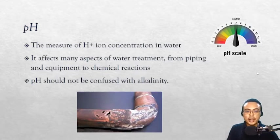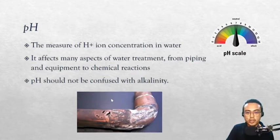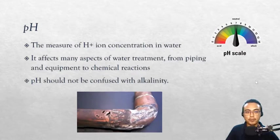The next chemical parameter is pH — the measure of proton ion concentration in water. The higher the proton concentration, the lower the pH. pH affects many aspects of water treatment: if water is acidic it can leach metal ions from piping and corrode equipment over time. If pH is too high it can also corrode process piping by inducing solubilization of piping materials. In water treatment, the ideal pH is neutral or very near neutral. pH should never be confused with alkalinity, which is a very different parameter.